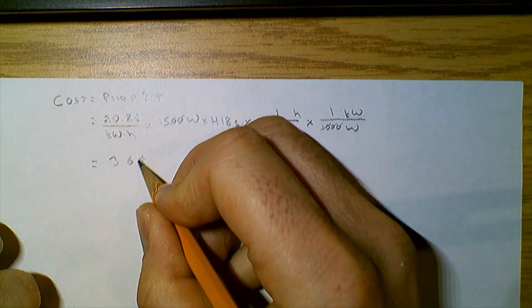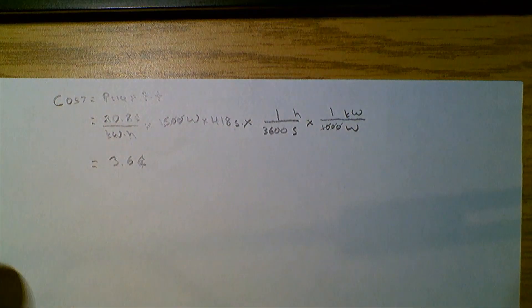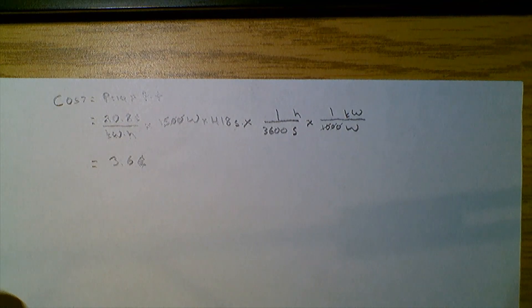So it costs 3.6 cents to boil 1.5 liters of water at peak hydro hours.